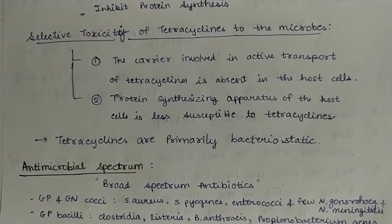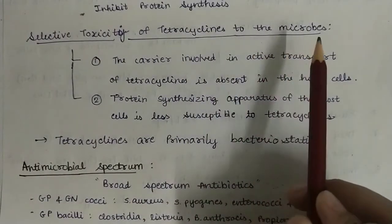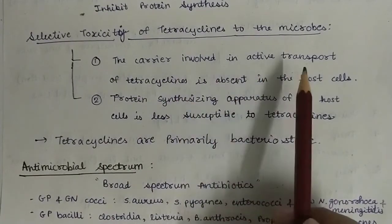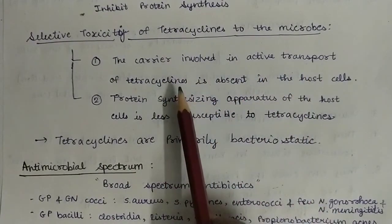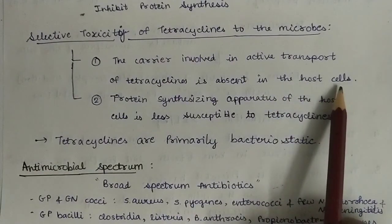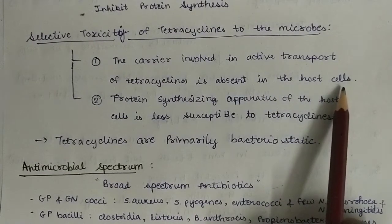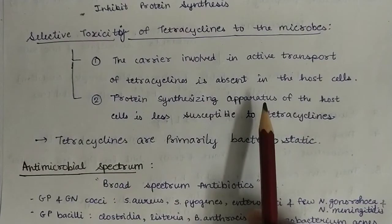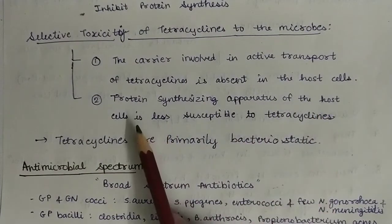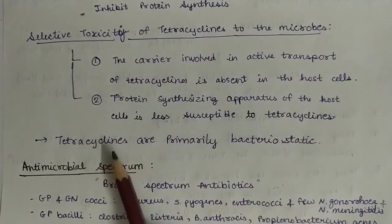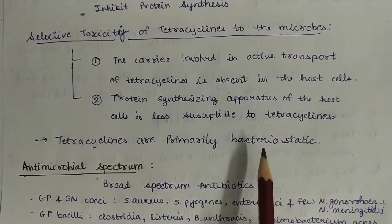Selective toxicity of tetracyclines to the microbes. First, the carrier involved in the active transport of tetracycline is absent in the host cells; hence it exhibits selective toxicity to the microbes and not to humans. The second point is that the protein synthesizing apparatus of the host cells is less susceptible to tetracyclines. Tetracyclines are primarily bacteriostatic.